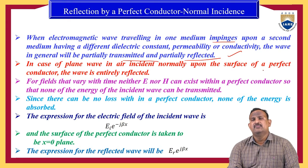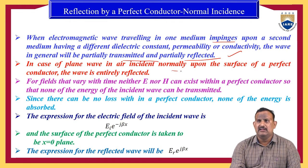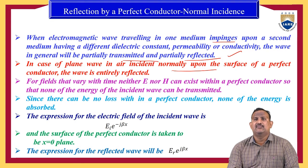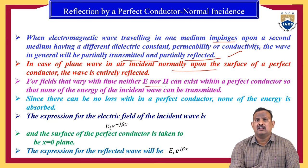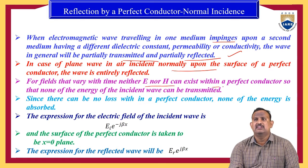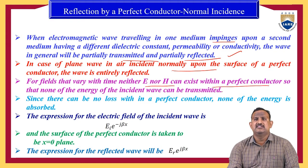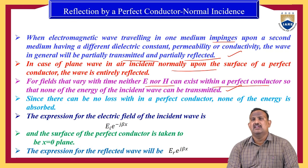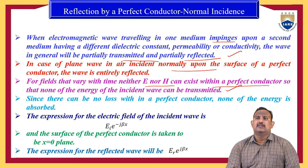In the case of a plane wave in air incident normally upon the surface of a perfect conductor, the wave is entirely reflected back. For fields that vary with time, neither electric nor magnetic fields can exist within a perfect conductor, so none of the energy of the incident wave can be transmitted. Since there can be no loss within a perfect conductor, none of the energy is absorbed.